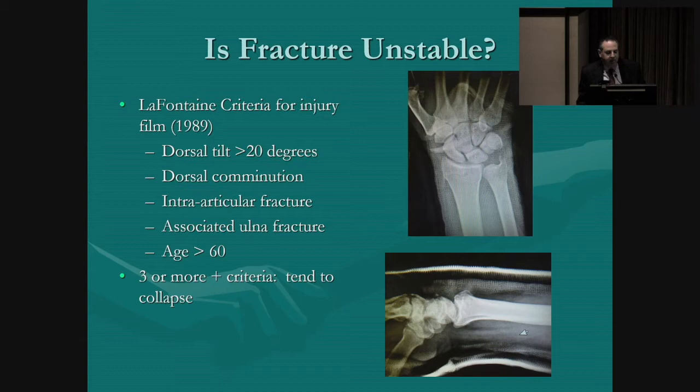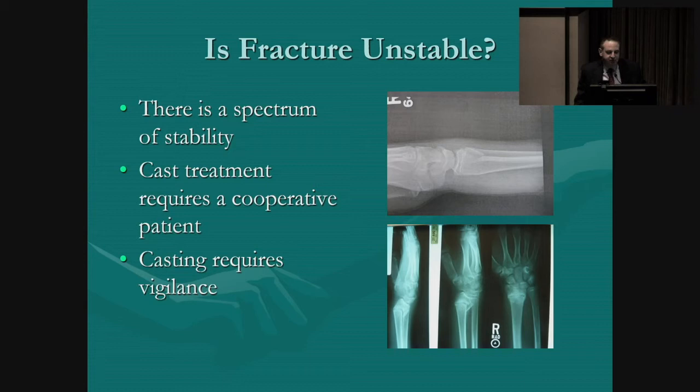This patient was younger than 60, had an associated ulnar styloid fracture, and didn't really have much dorsal comminution. It was an intra-articular fracture, but he was treated successfully with just a cast. There's a spectrum of stability, and cast treatment requires a cooperative patient and requires vigilance.